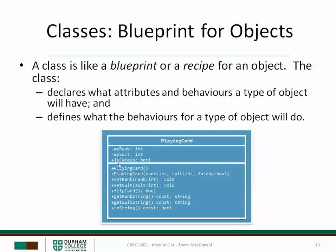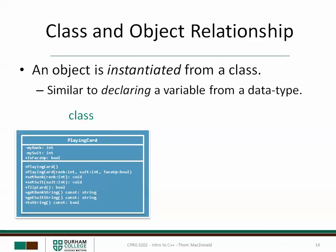A class is like a blueprint or a recipe for an object. What the class does is declare the attributes and the behaviors that a type of object will have, and then it also defines exactly what each of these behaviors is going to do. To actually create an object, we use instantiation — it's similar to declaring a variable from a data type, but what we do is instantiate an object from a class.